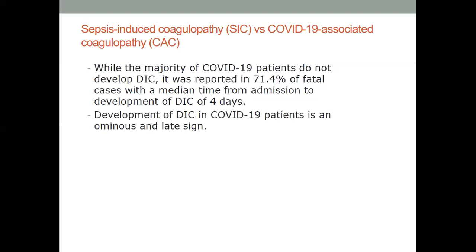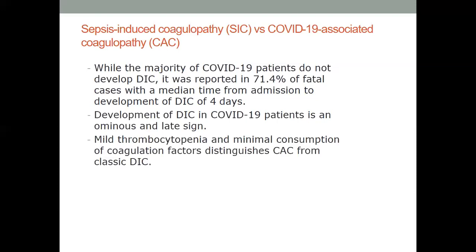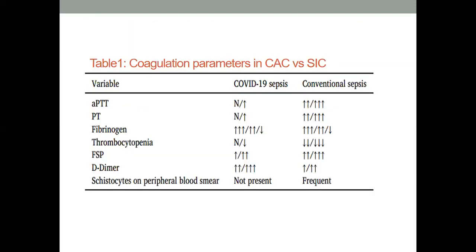Development of DIC in COVID-19 patients is only a late ominous sign. This table shows the stark differences: APTT and PT which may be preserved or only slightly affected in COVID-19, versus known sepsis-induced DIC where you will have a marked perturbation. Fibrinogen is usually high because this is an inflammatory condition, but a low fibrinogen is a really late sign.